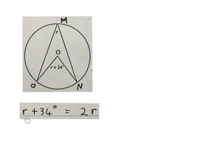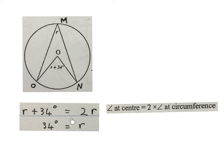We write R plus 34 degrees equals to 2R. The angle there is twice as big as the angle over there. Reason. Angle at center is twice angle at circumference. Then we just solve this equation. I minus this R on this side. Then I get R equals 34 degrees. And I always advise people to write the answer that you get into the sketch.